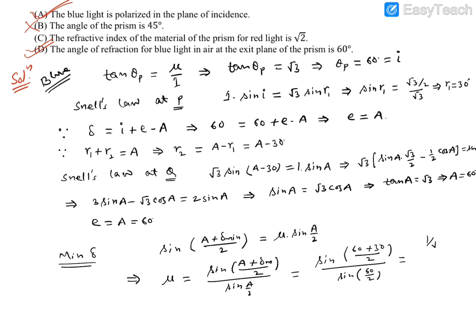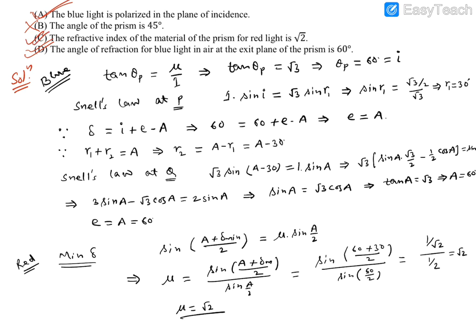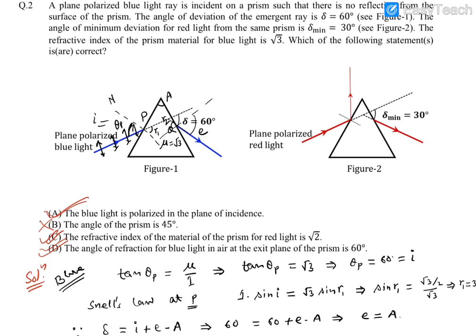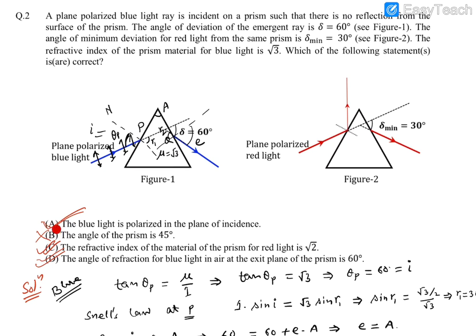So μ_red = sin 45° / sin 30° = (1/√2) / (1/2) = 2/√2 = √2. Option C states the refractive index of the prism material for red light is √2 — yes, that is correct. So the final correct answers are A, C, and D. I hope you got it, thank you.